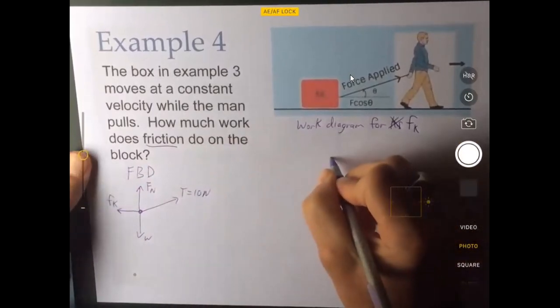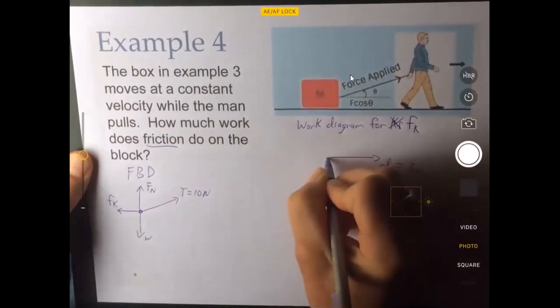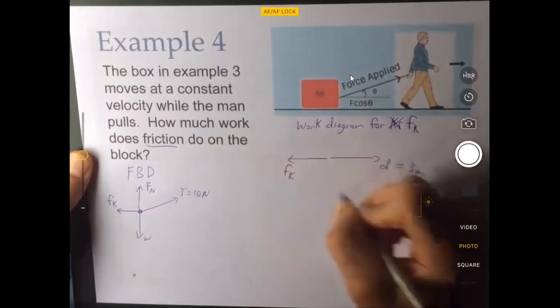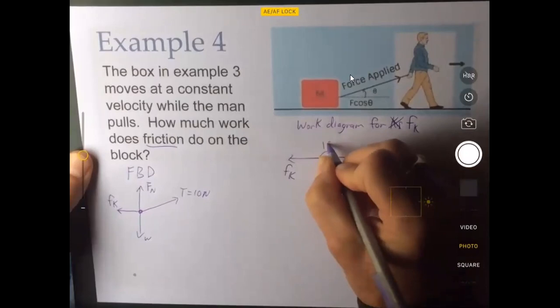So the displacement, well, it's moving three meters to the right, but the friction force is to the left. Now what's the angle between those? That is a 180 degree angle.